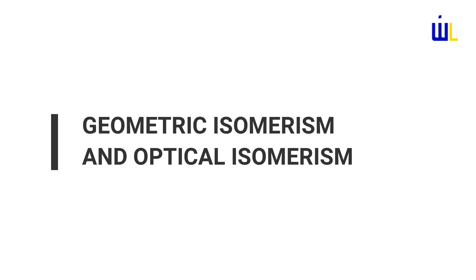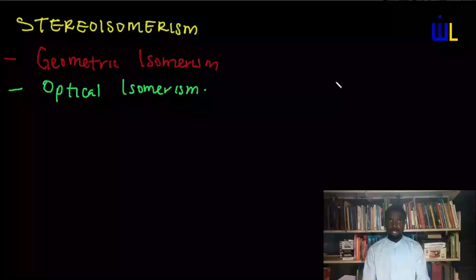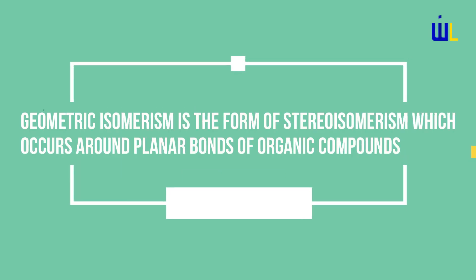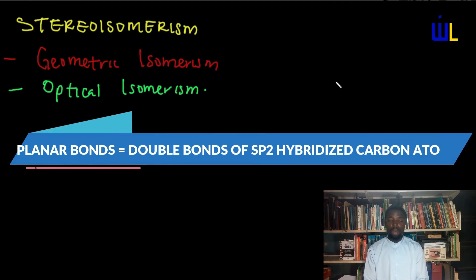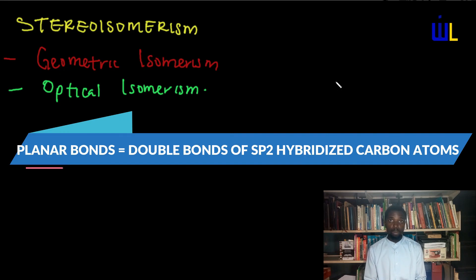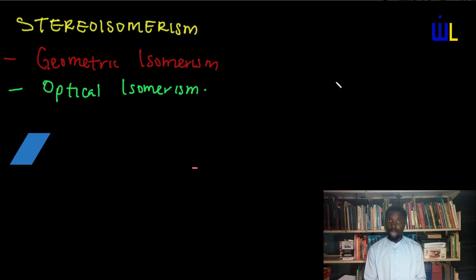There are two major forms of Stereo Isomerism: Geometric Isomerism and Optical Isomerism. Geometric Isomerism is the form of Stereo Isomerism which occurs around planar bonds of organic compounds. By planar bonds, I mean double bonds — where you have carbon atoms with sp2 hybridization bound together, the bond formed is planar, and the isomerism that occurs around them is Geometric Isomerism.